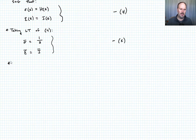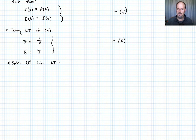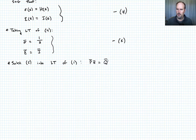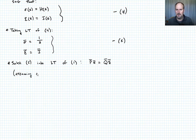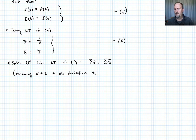We're going to substitute equation five into the Laplace transform of equation one, which looks like P bar times sigma bar equals Q bar times epsilon bar. This is assuming that sigma and epsilon and all their derivatives vanish at T equals zero as we approach it from the negative side.